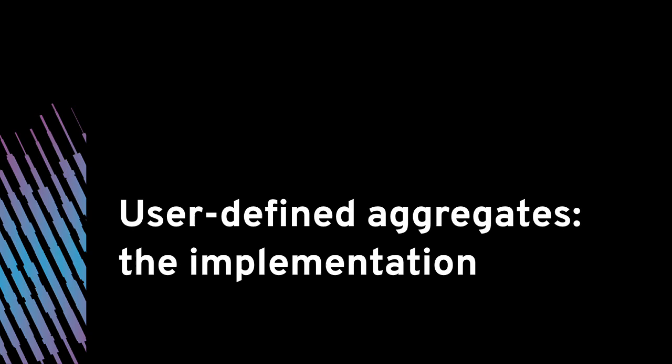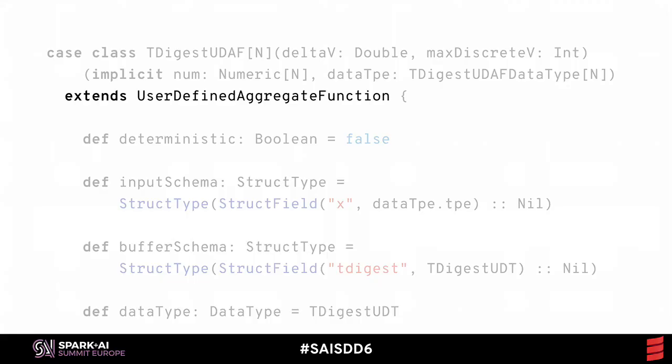I'll begin with the implementation logic, because that's what defines the data frame operation that you're trying to provide for your users. Any custom aggregator we define has to be a subclass of the user-defined aggregate function trait. This trait defines the methods that we have to fill in to play by the rules in Spark's data frame world.